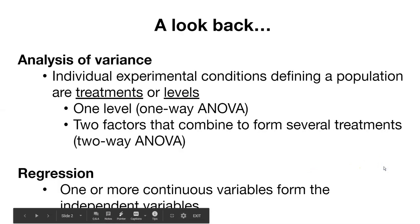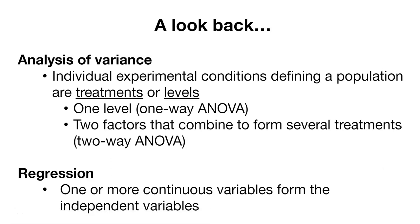Let's take a look back. We've learned a lot about analysis of variance and about regression. You'll remember that the analysis of variance tests whether several populations have the same means, and by doing this, it compares how far apart the sample means are with how much variation there is within a sample. As an example, we could do a one-way analysis of variance, where we just have one level or one treatment that we're analyzing.